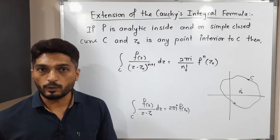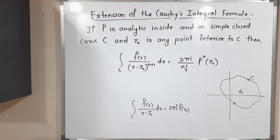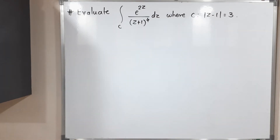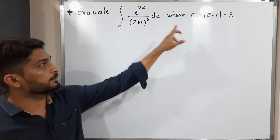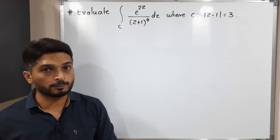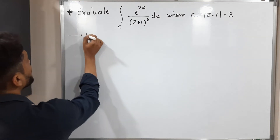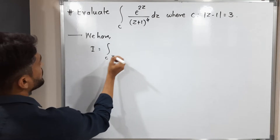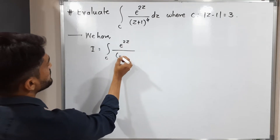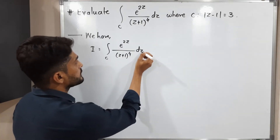Let us discuss one example so you can easily understand how to apply this extension of Cauchy's integral formula. In this example we have an integration over a closed curve C, where C is a circle. We need to find its value. Let us call the given integral I, so I equals the integration over C of e^(2z) upon (z+1)^4 dz.